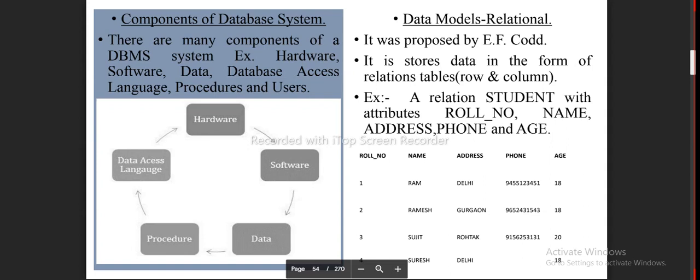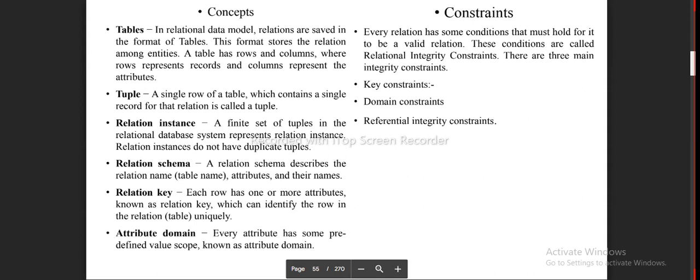A Relation Student With Attributes: Rowland, Ascono Name, Address, Phone and Age. Example records: 1-Ram Delhi 94551-3451-18, 2-Ramesh Gurgaon 965-4315-4318, 3-Sujit Rahatak 9156-5313-120, 4-Suresh Delhi 18. Page 55 of 270.